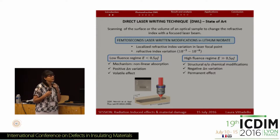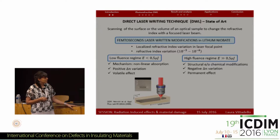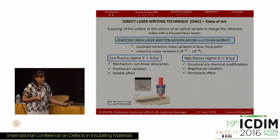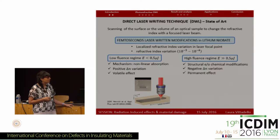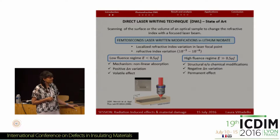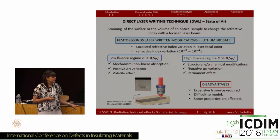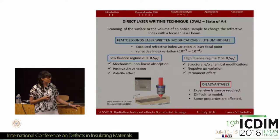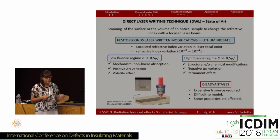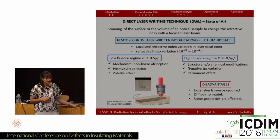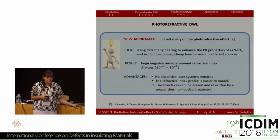According to the literature, there are two regimes: a low-energy regime in which the refractive index variation is linked to non-linear absorption, and a high-energy regime in which the variation is achieved by structural or chemical modification. This technique is well known and produces good results, but it has some disadvantages. The laser source is very expensive, and it's difficult to model the results because many processes arise during this type of irradiation and many properties of lithium niobate are affected during exposure.